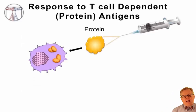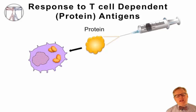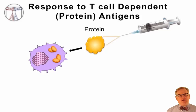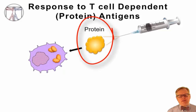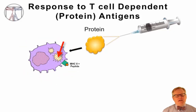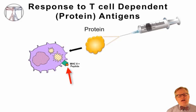Now let's review how the immune system responds to a T-cell dependent or protein antigen — this is the way that it responds to most proteins. The vaccine containing a protein is administered into the muscle or into the skin, and phagocytes migrate to the site of that injection and begin to ingest the vaccine proteins. They digest those vaccine proteins and present pieces of what they have digested on the cell surface in MHC class II molecules.